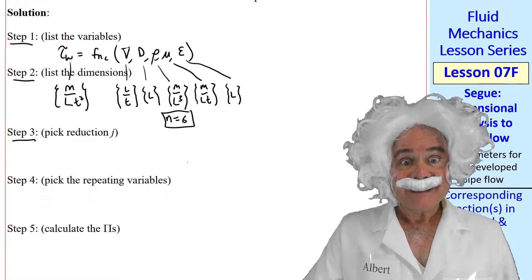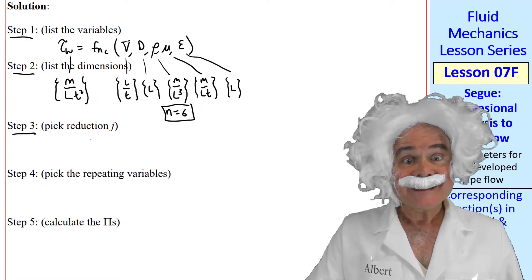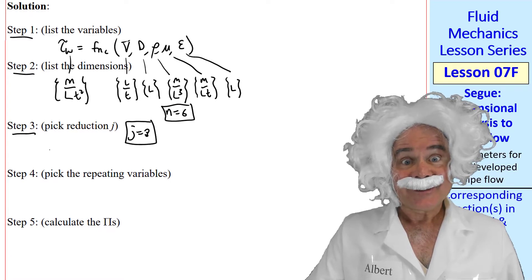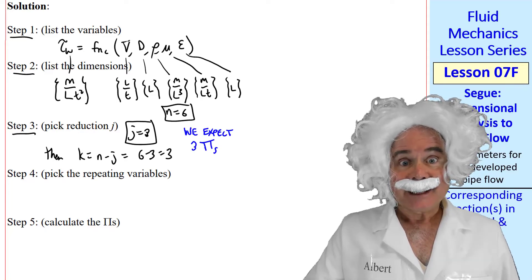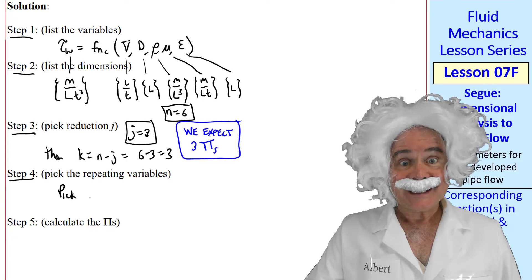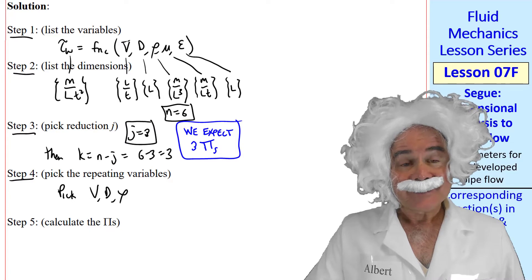Step three. Since we have m, l, and t as our only primary dimensions, j equals 3. Therefore, k equals n minus j equals 6 minus 3 equals 3. Thus, we expect three pies. Step four. As you said in a previous lesson, it is good to pick v, d, and rho. And these represent all three of the primary dimensions.